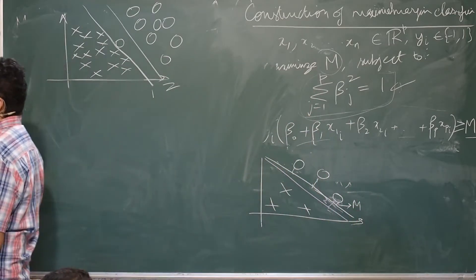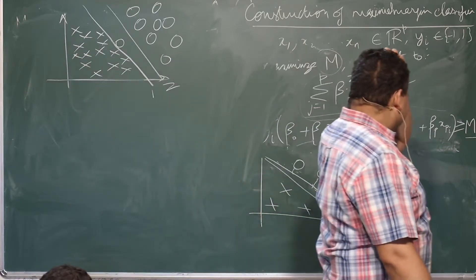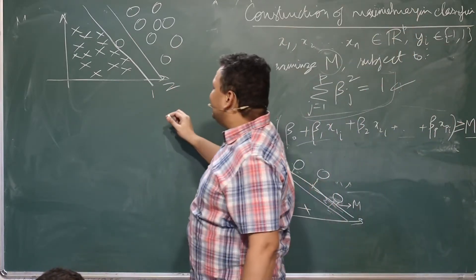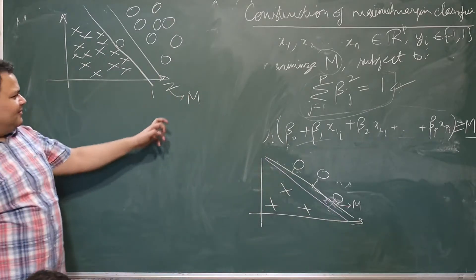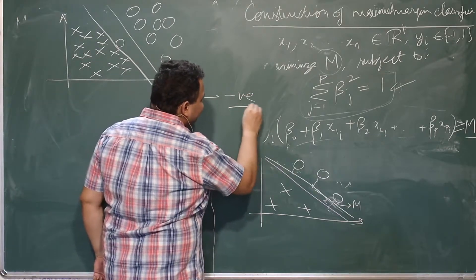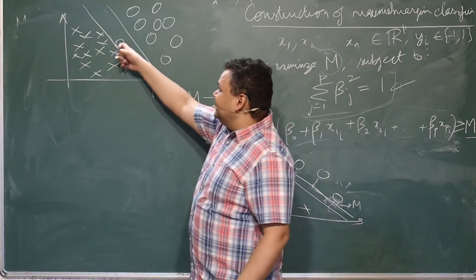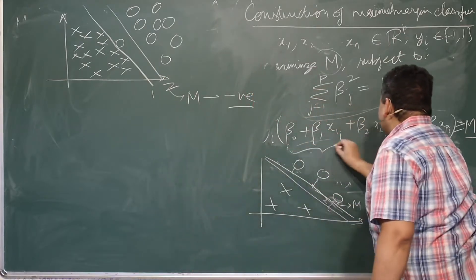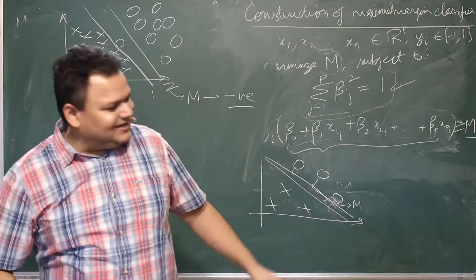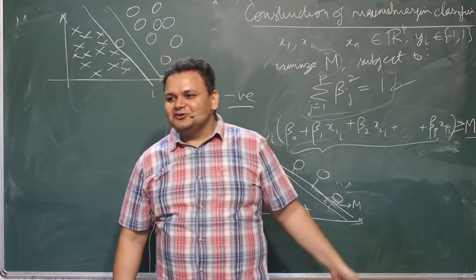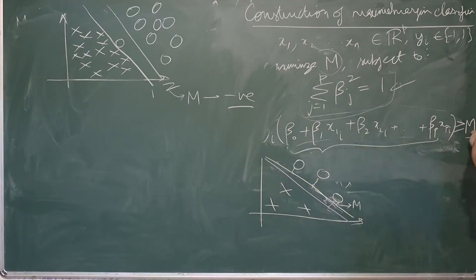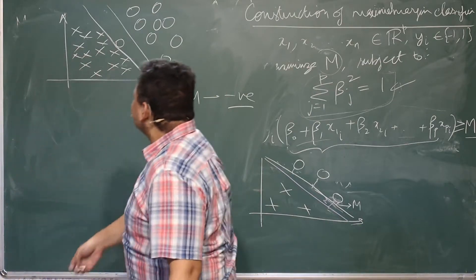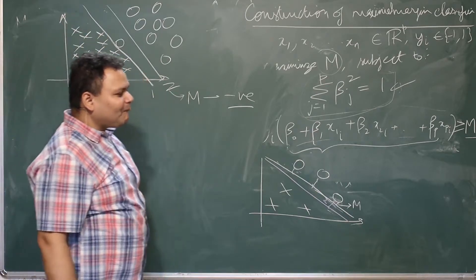Let us first assume it is line two — what is M going to be in that case? If I choose line two, capital M is going to be a negative value. In case of line two, the circle has a positive y value (y = +1), but the distance value will come out negative — negative M. Whereas if we choose line one, M will be positive.